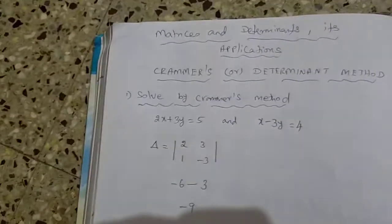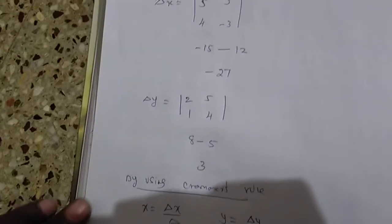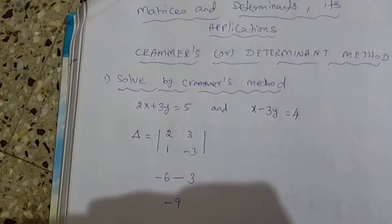This is the procedure for Cramer's method in the form of a 2 by 2 matrix. Thank you.